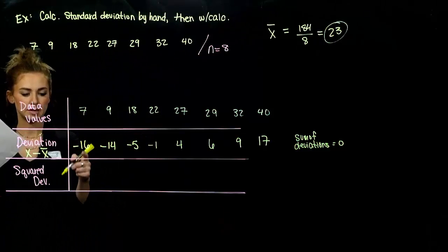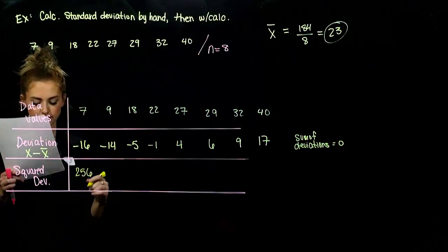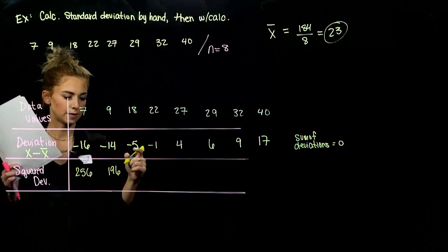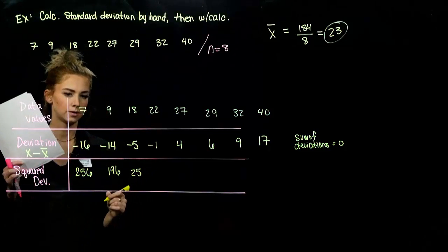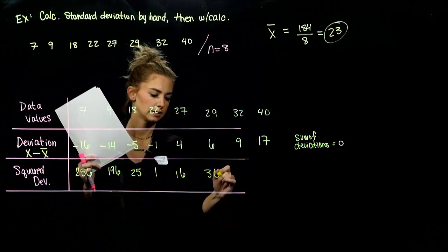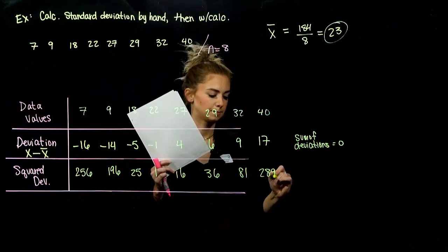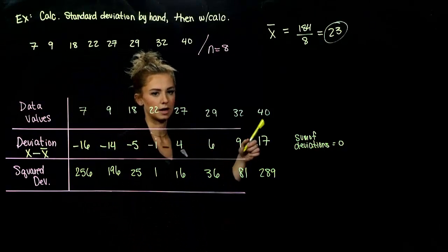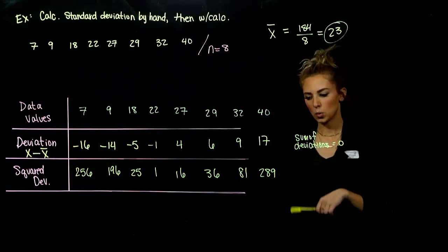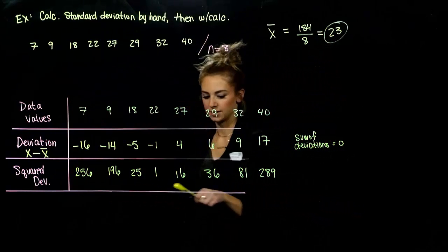So the squared deviations: 16 times 16 gives us 256; 14 squared is 196; 5 squared is 25; 1 squared is 1; then 16, 36, 81, and 289. We got the mean, figured out how far away each data value was from the mean, and squared all of those. Now we have all positive values.